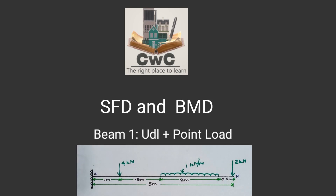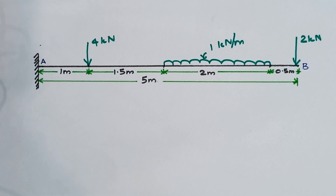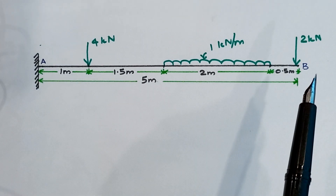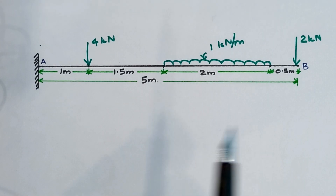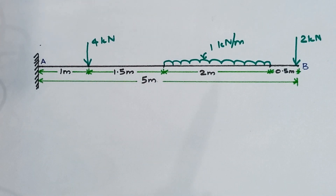Let's see how to draw a shear force and bending moment diagram if a loaded beam is given. This beam is of 5 meter length. At end A we have a fixed support and end B is a free end. Regarding the applied loading, we have 2 point loads and 1 UDL which is acting over a span of 2 meters.